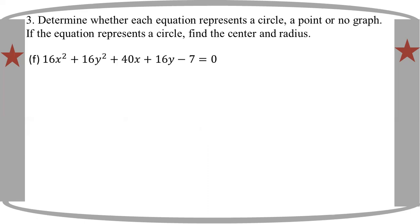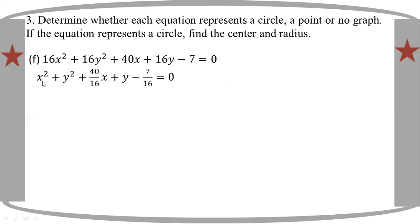X squared plus Y squared plus 48X plus 16Y minus 7 equals 0. Focus on each side. X equals 0.